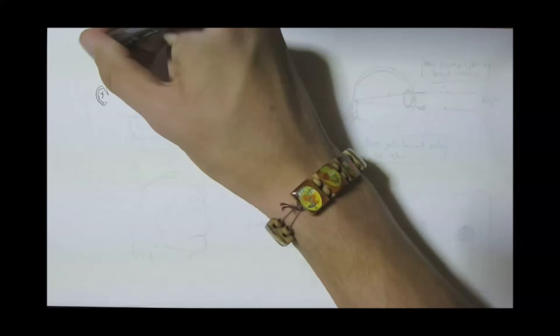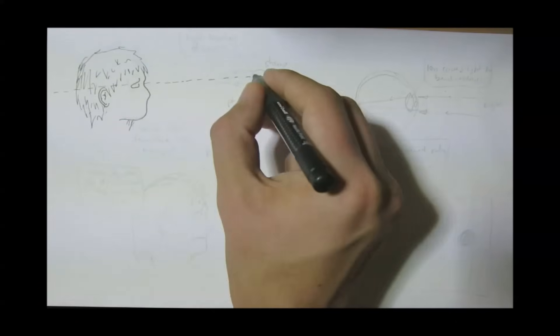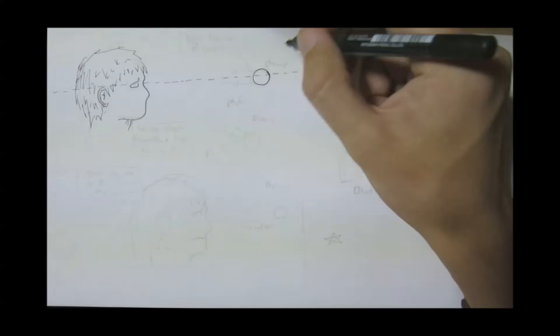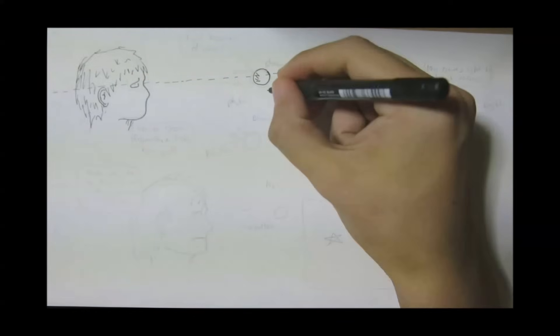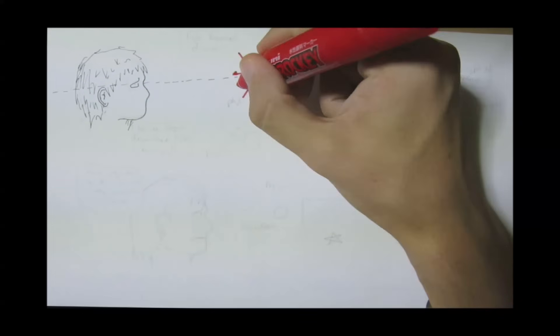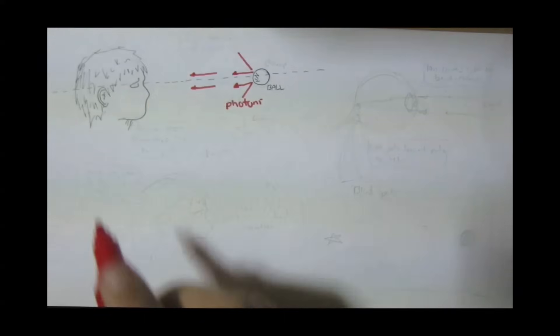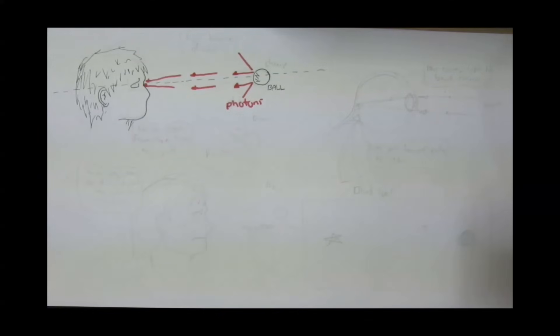To do this, I'll draw this young lad, who is looking straight ahead at this ball over here. And he can see this ball clearly because the light coming from the sun bounces off this object as photons. And these photons then travel to his eyes, allowing him to see the ball.